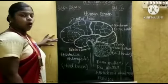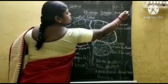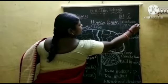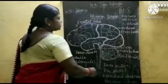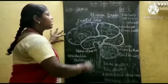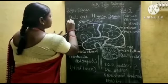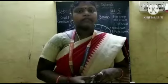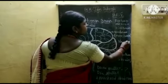The brain consists of 3 parts: forebrain, midbrain, and hindbrain. Our human brain is kept in a bony case that is called the Skull or Cranium. It is made up of 8 immovable bones. The functional unit of the brain is known as a Neuron.